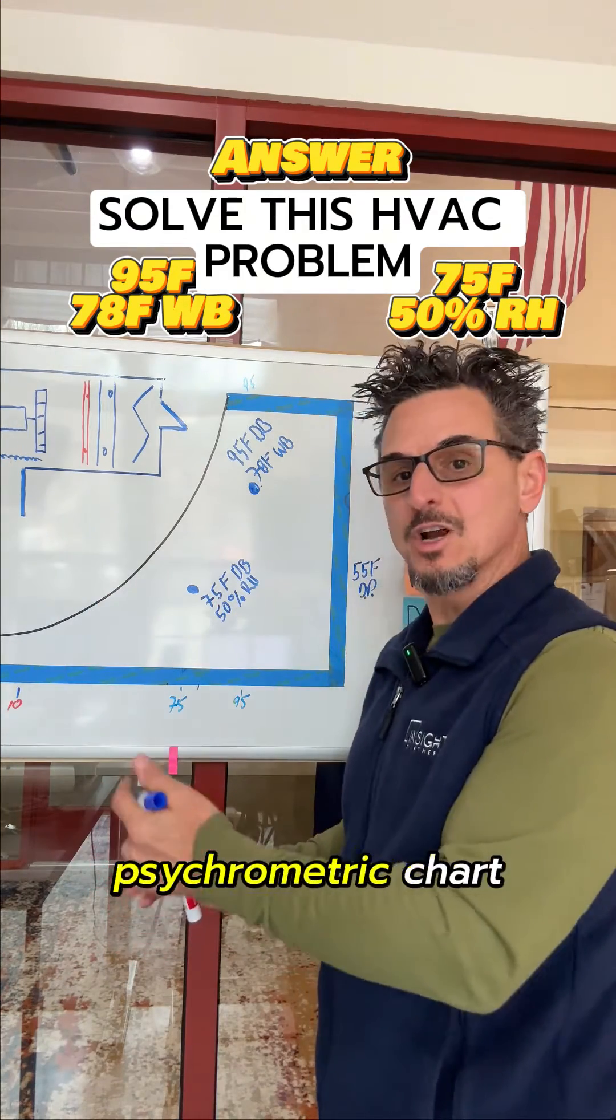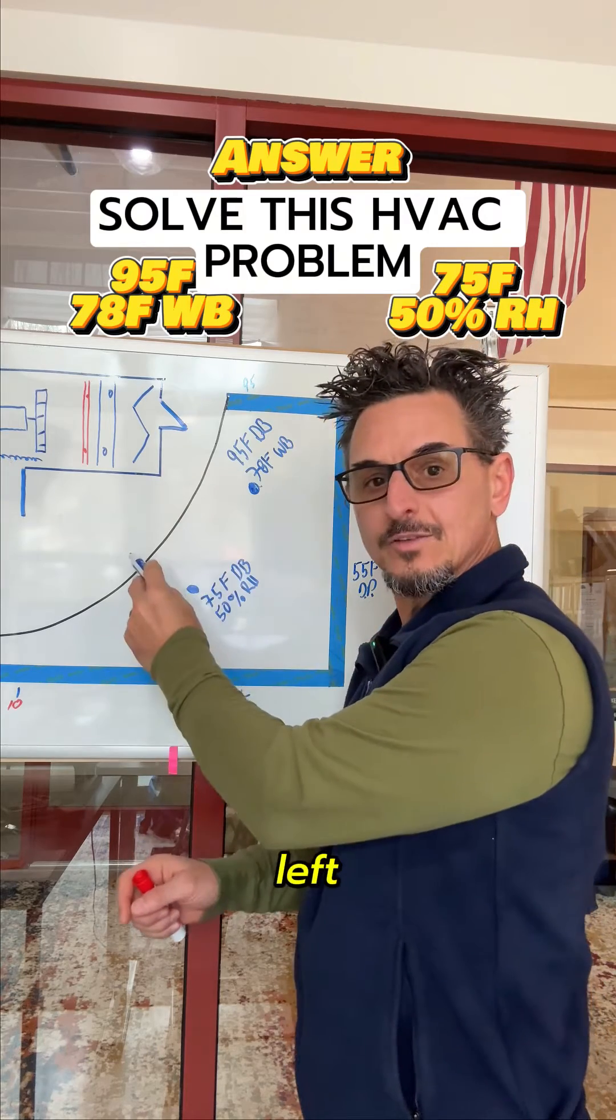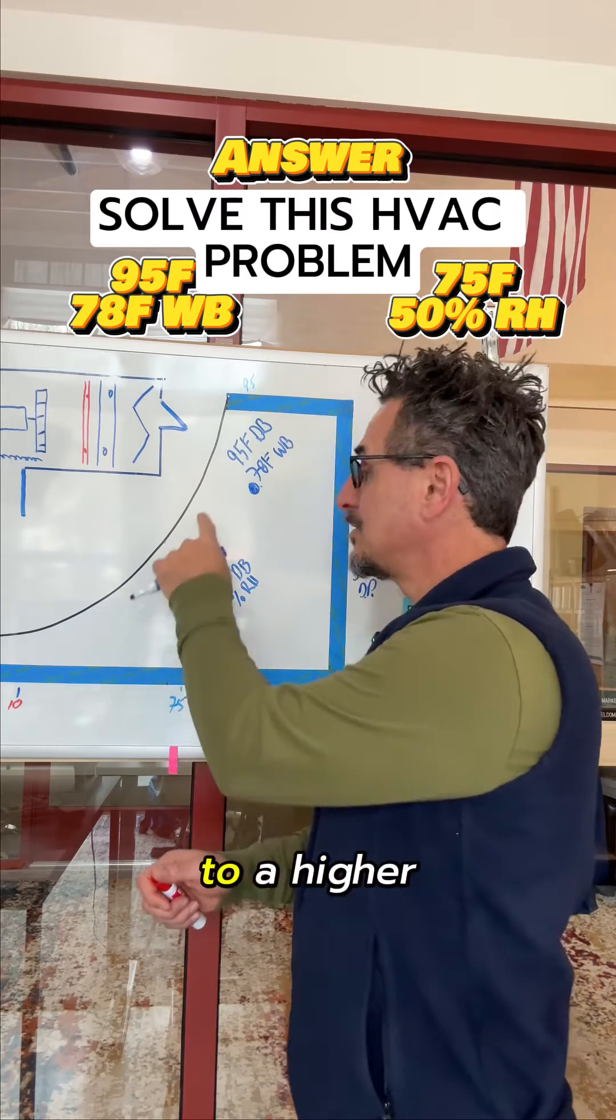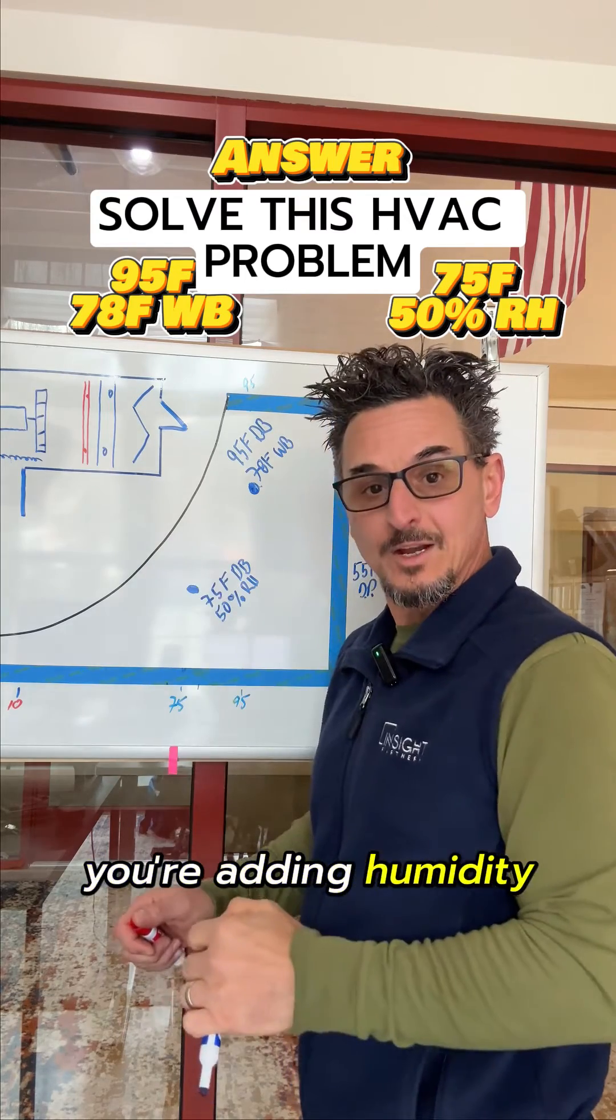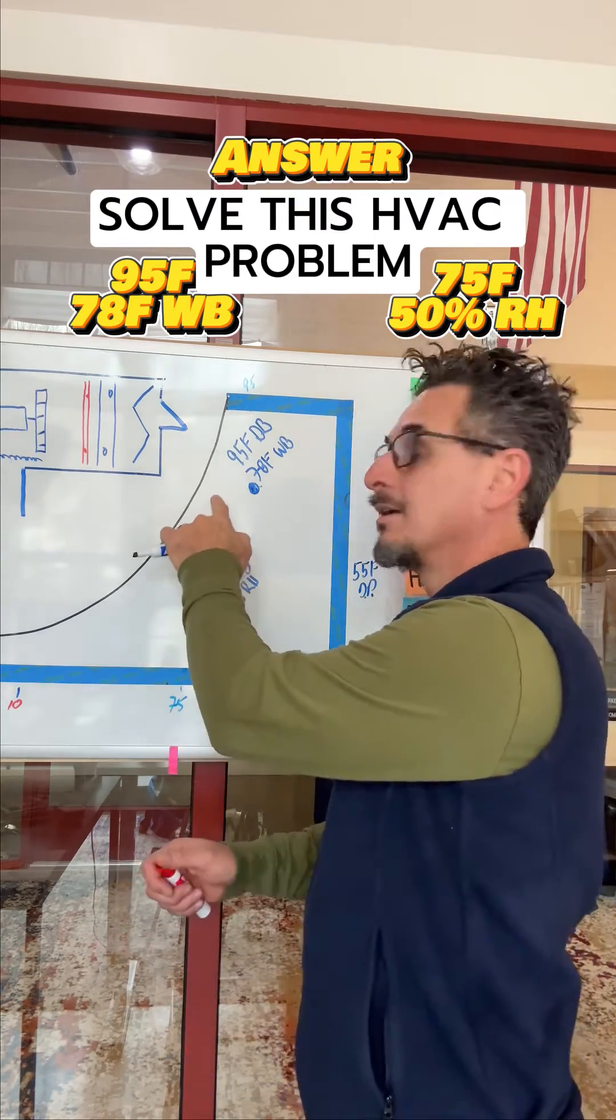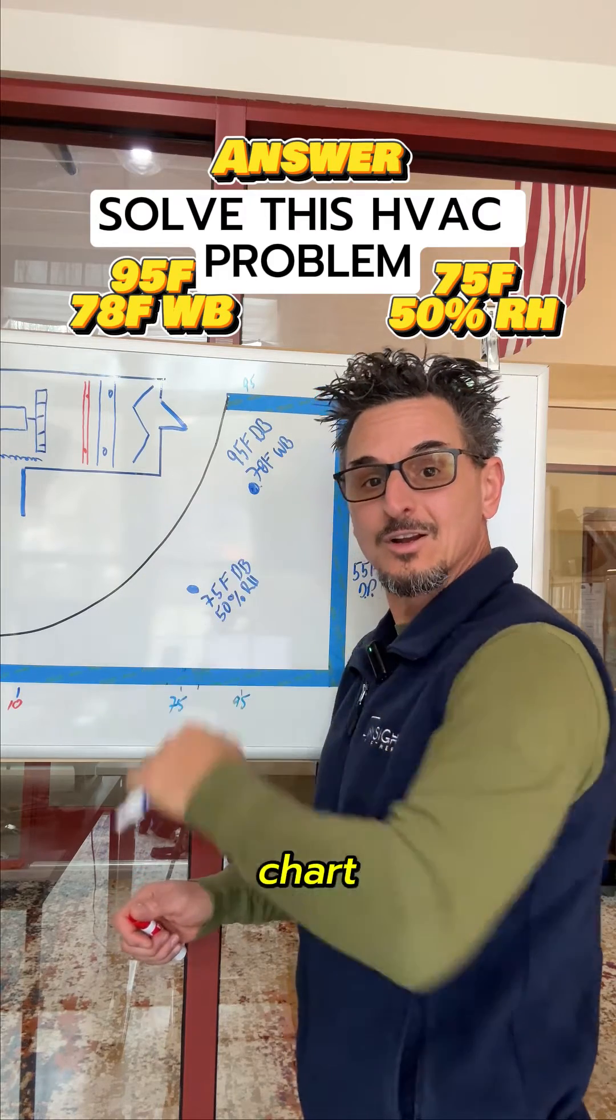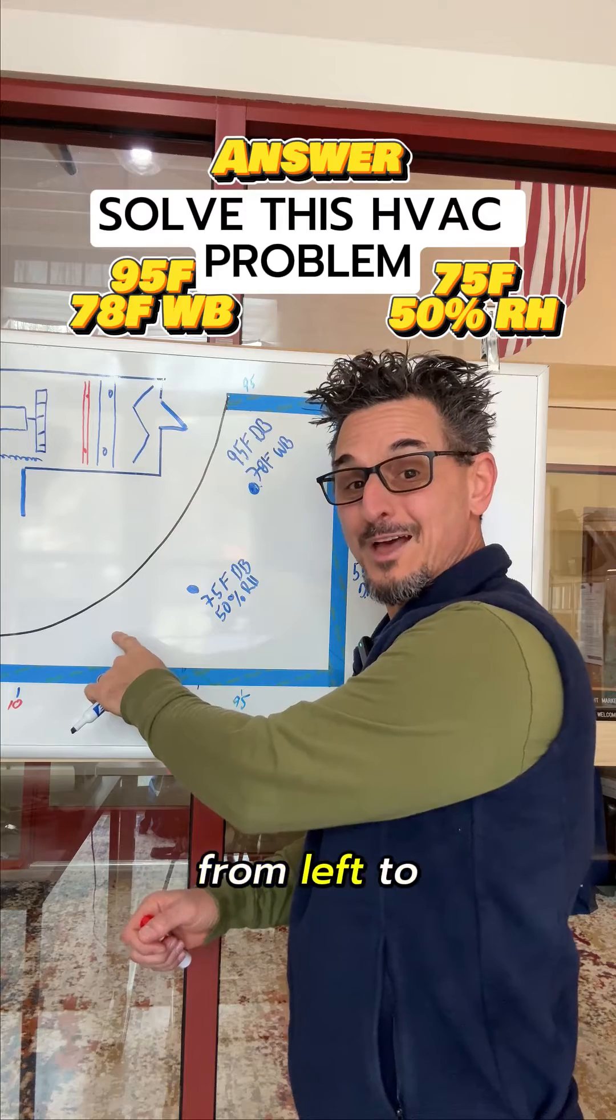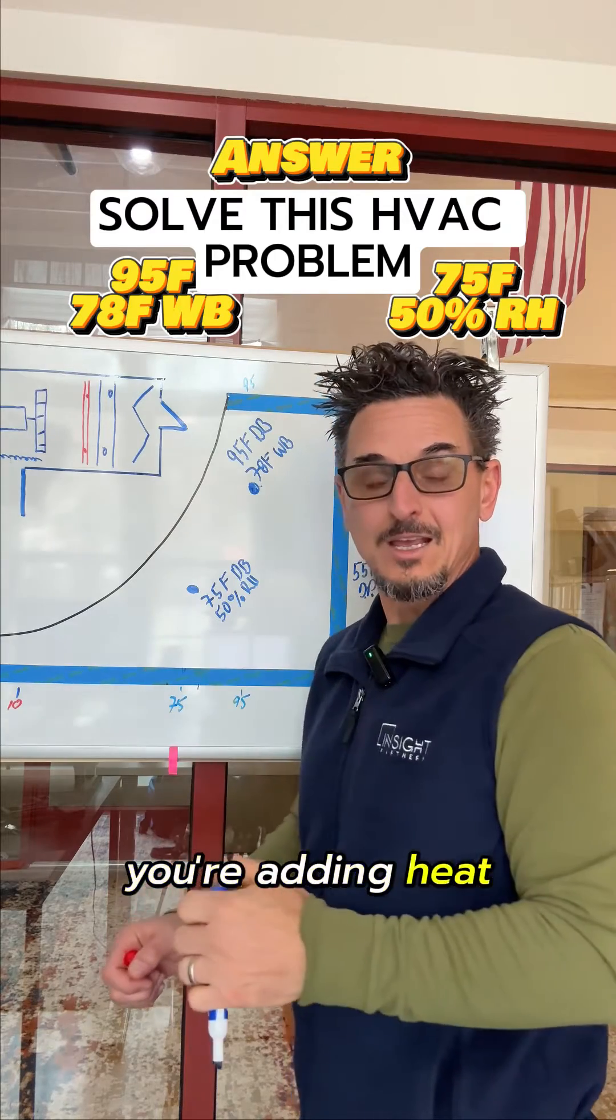So an overall view of the psychrometric chart: when you're moving from right to left, you're sensibly cooling. When you're moving from a lower point to a higher point, you're adding humidity. When you're moving down the psych chart, you're removing humidity or dehumidifying. When you're moving from left to right, you're adding heat or heating the air.